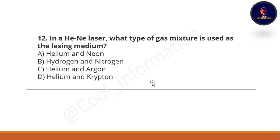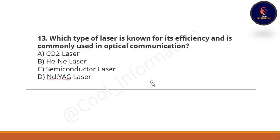Question 12: In a HeNe laser, what type of gas mixture is used as the lasing medium? This is a very important question. Option A: helium and neon. Option B: hydrogen and nitrogen. Option C: helium and argon. Option D: helium and krypton. The correct option is helium and neon.